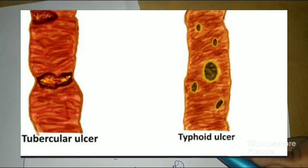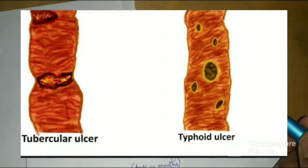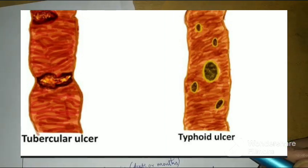We also have transverse ulcer in the patient of TB compared to typhoid. You can see in this image these ulcers, whereas when you see a patient of typhoid because of involvement of Peyer's patches we see longitudinal ulcer.